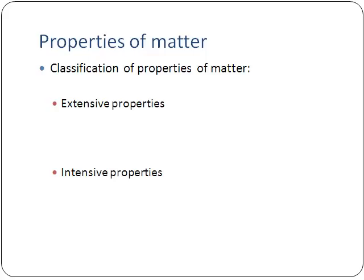Extensive properties are things that are a property of that particular sample of an object. An example might be mass. If I have a block of wood and I measure its mass, that tells me some property of the item. But if I cut that block of wood in half, that property changes — it had a mass of three kilograms, I cut a piece off, now it has a mass of 2.5 kilograms. That's an indication that this is an extensive property.